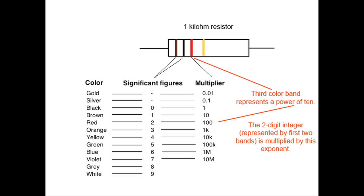The next band represents the multiplier or power of 10 by which that two-digit number is multiplied. The same values are applied to each color, but this time those numbers represent powers of 10. Black is 10 to the zero power, red is 10 to the second, so our value is 1,000 ohms.